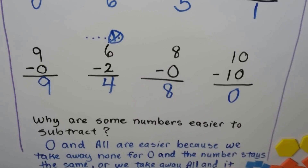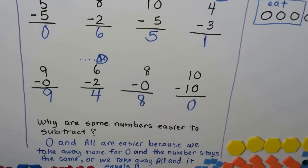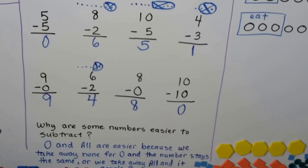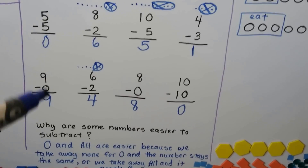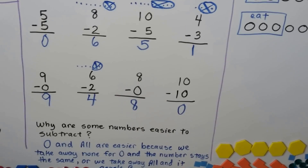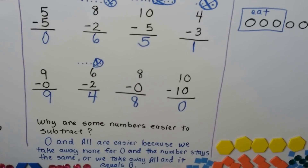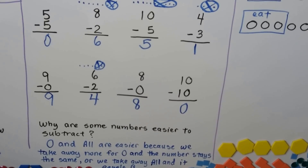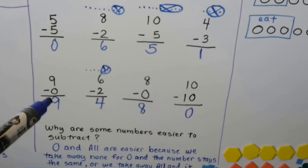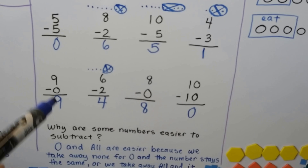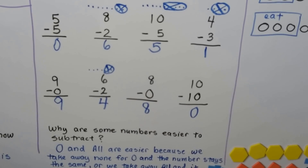Why are some numbers easier to subtract? Zero and 'all' are easier — because when we take away none (zero), the number stays the same. And when we take away all, the answer is zero. So those are easy ones to subtract. The other ones we might have to use counters, but the answer is either going to be the same number or zero.